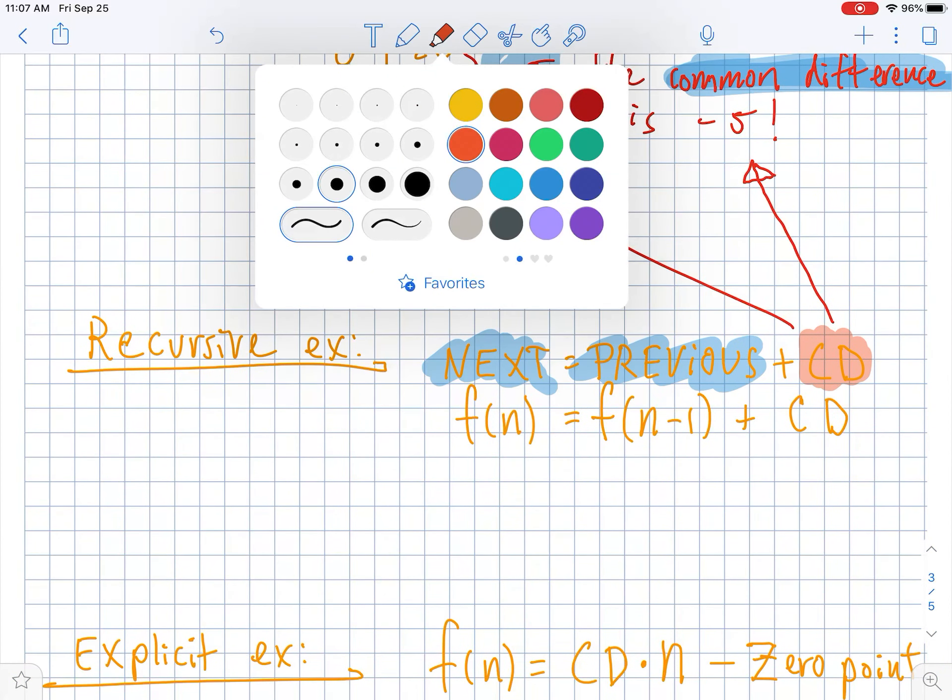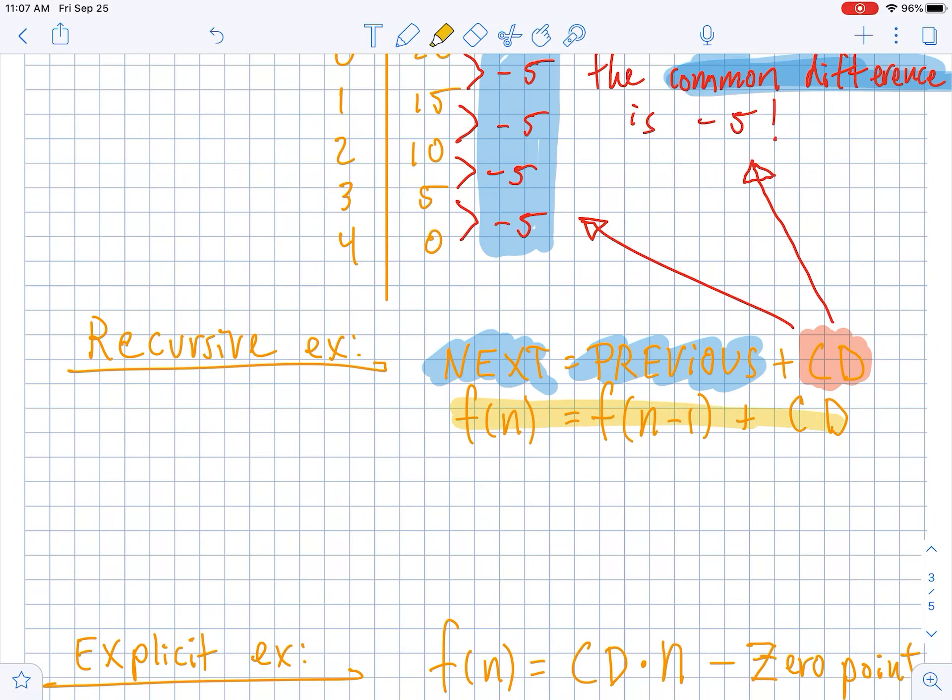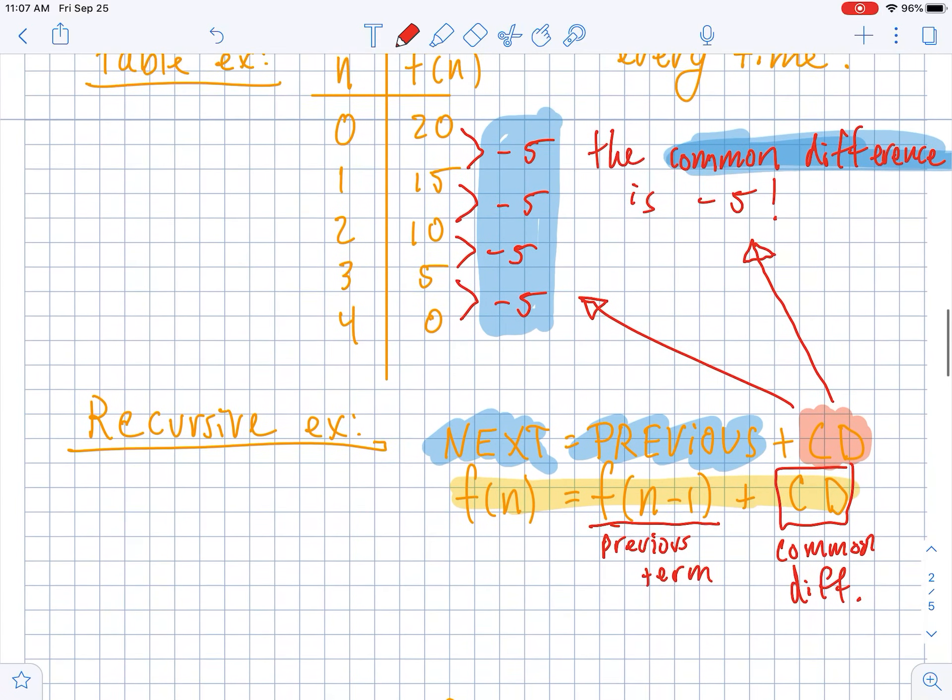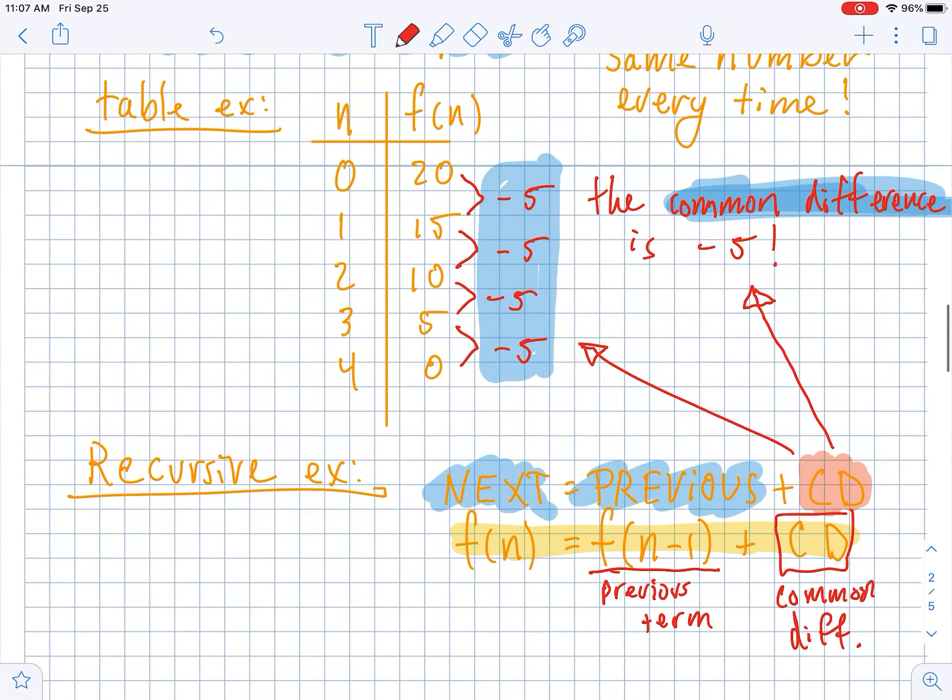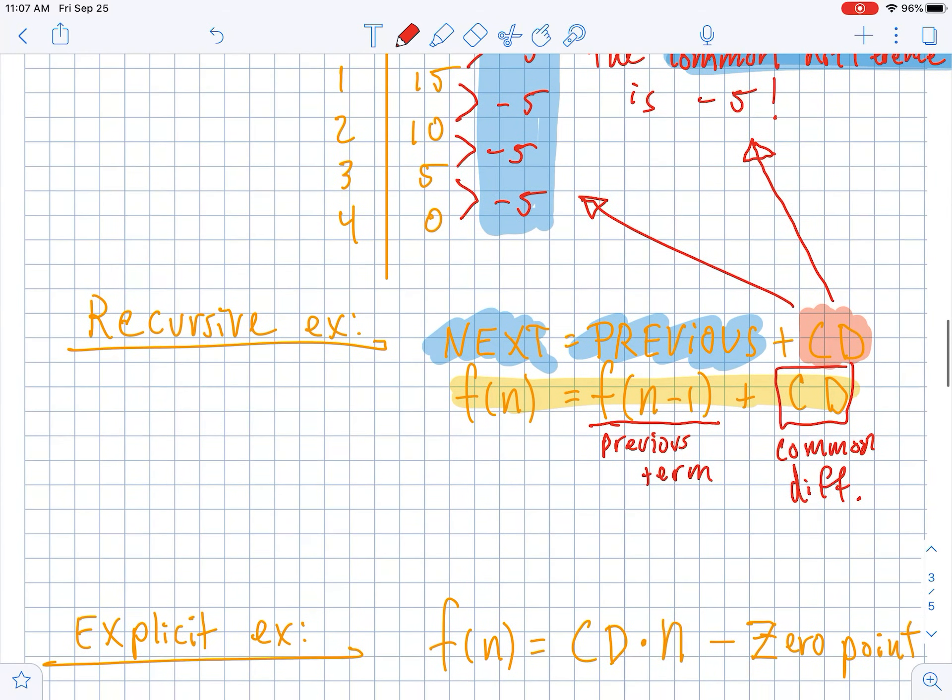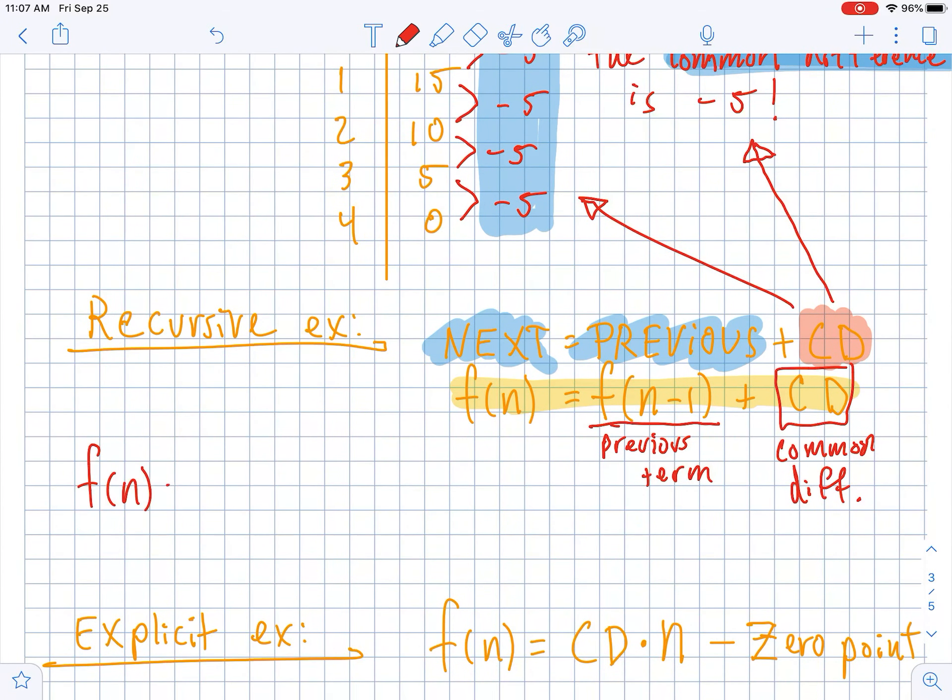In general, with this sequence, you take the last term and subtract 5 to get the next term. To put that in a little bit more of a function notation, this right here, f of n equals f of n minus 1. Now a lot of students are like, what is the f of n minus 1 part? This is just the term right before n. So this is the previous term. And then CD is still our common difference.